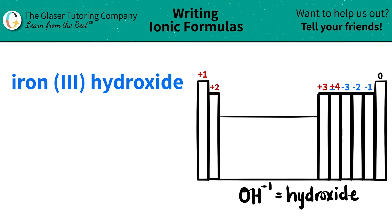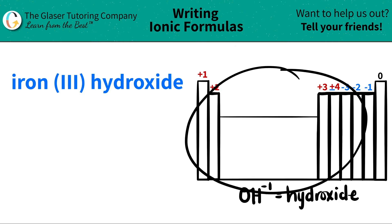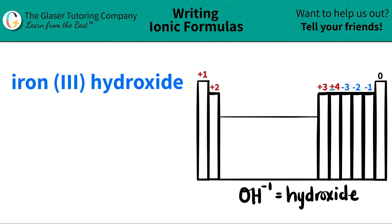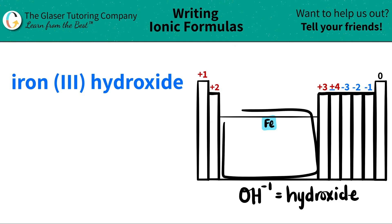The first thing I see is iron. So I'm going to scan the periodic table to find out where iron is. Iron is right here. Iron is represented as Fe. It's in this little block, so it's a transition metal — it's a metal. That's why this is ionic. So I'm just going to write Fe for iron.